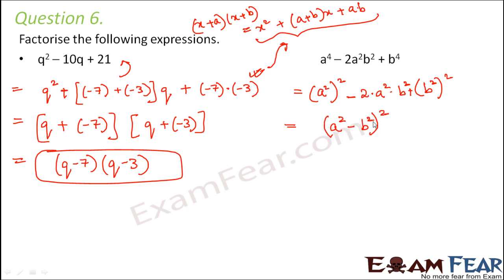Because here a square is behaving like a, b square is behaving like b. Now a square minus b square. This can be written as a plus b into a minus b. This entire thing's whole square. So this can be written as a plus b whole square into a minus b whole square. So this is the factor form.